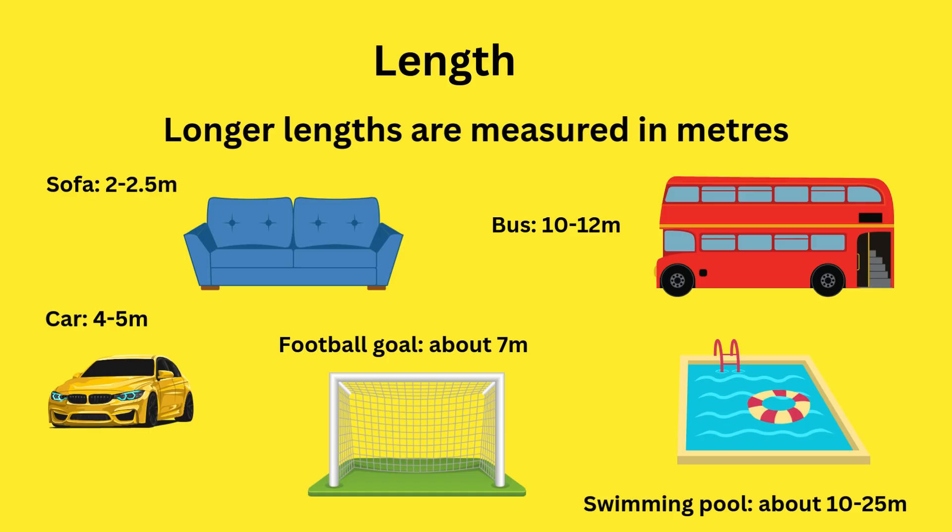Longer lengths are measured in meters. A sofa is about 2 to 2.5 meters. A bus is about 10 to 12 meters. A car about 4 to 5 meters. And a football goal about 7 meters. A swimming pool is about 10 to 25 meters.